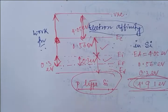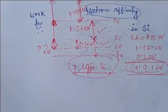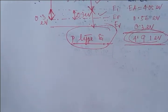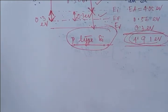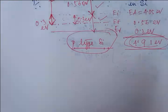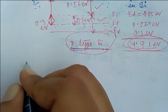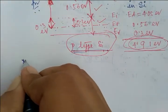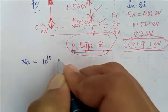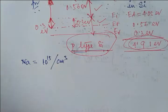You should have knowledge of the different parameters associated with scaling and the short channel effect — these are the challenges of scaling. For p-type silicon with acceptor impurities, NA is equal to 10 to the power 15 per centimeter cubed.